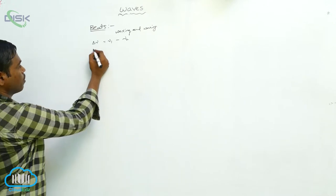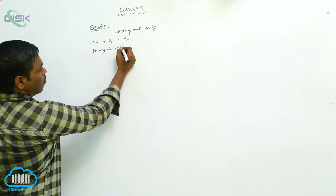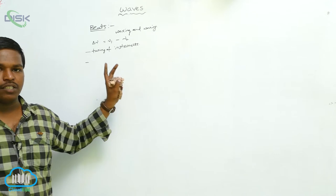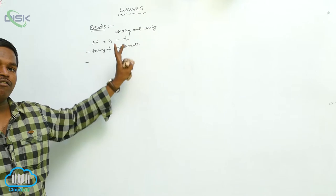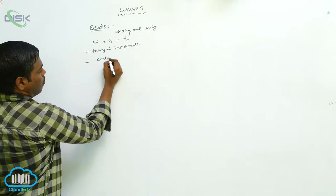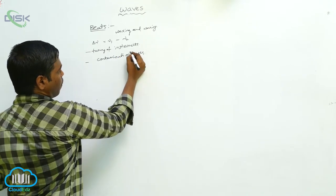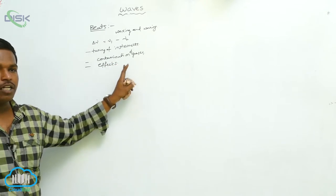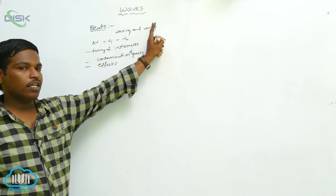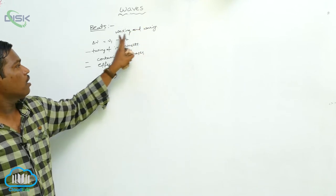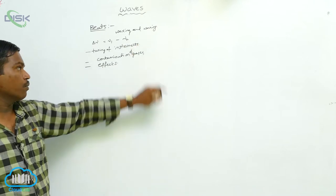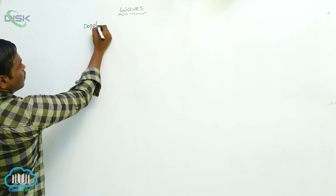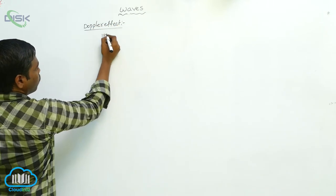Because of beats produced in a medium, we have some advantages: we can tune instruments — tuning of instruments is caused by this beat frequency. For example, in mines, if there is any contamination of gases present, that can be determined by producing beats. Also, in cinematography, for producing special sound effects, beats are used. Simply, beats means the waxing and waning of amplitude of a wave, and the beat frequency delta_nu equals nu₁ minus nu₂.